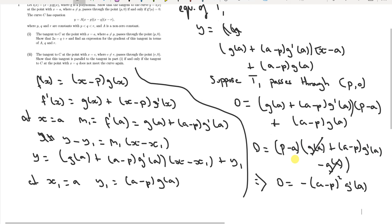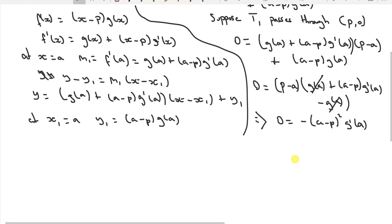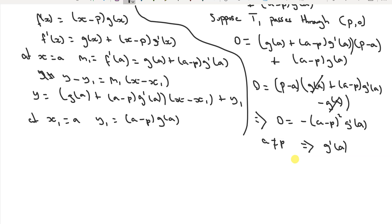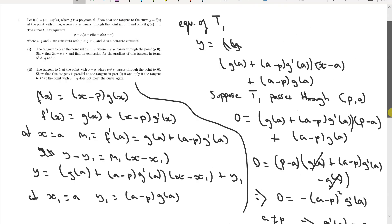Since a ≠ p — that condition was given in the question — (a − p)² ≠ 0, so the only possible outcome is that g'(a) = 0. That completes the first direction of the proof.